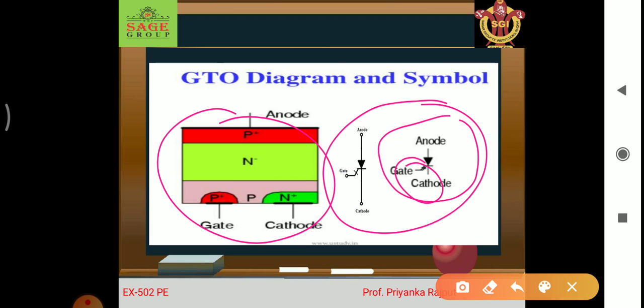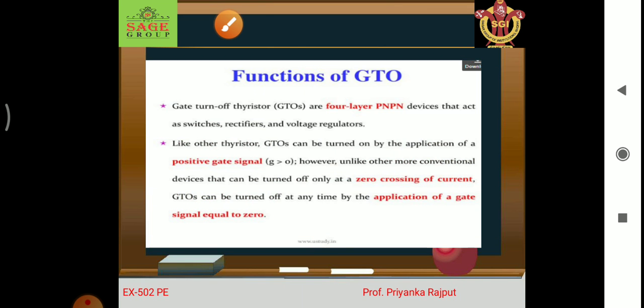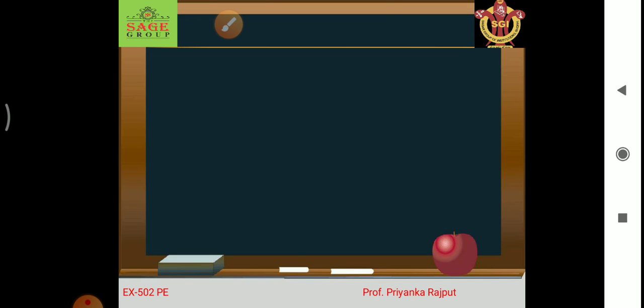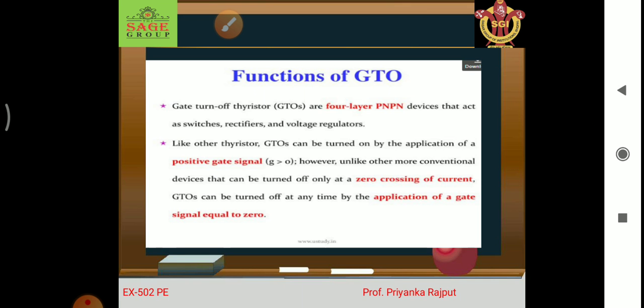GTOs are 4-layer PNPN devices that act as a switching rectifier and voltage regulator. Like other thyristors, a GTO can be turned on by application of a positive gate signal.